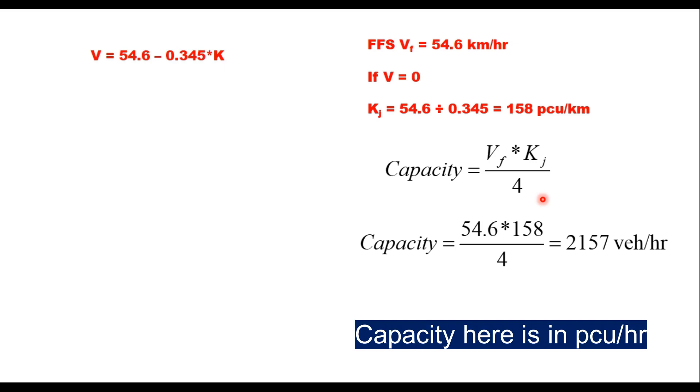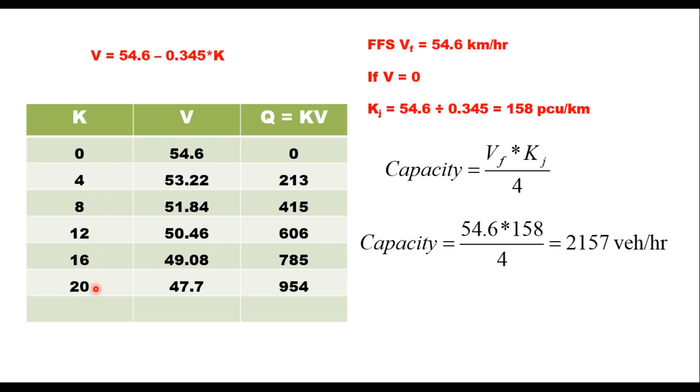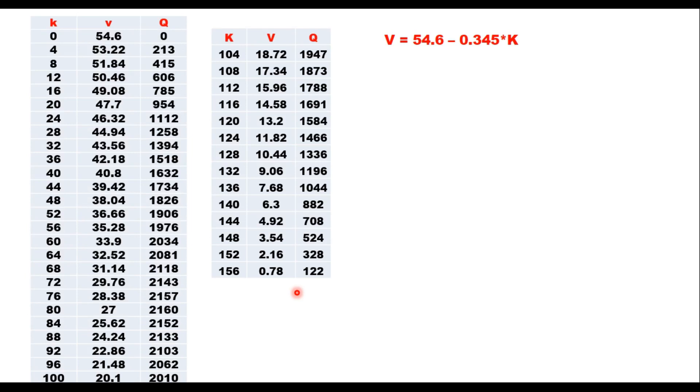Now if you want to see how this capacity is achieved, you can prepare a table. You can generate the data. K you can take from 0 to 158, the jam density. Beyond that speed will become negative. You can have 0 density, then 4, it can be 6 also, it can be 5 also, but in step of 4 or 5 or 6 you generate the table. Using this equation you calculate speed, and using Q equals K into V you find out the flow. This kind of table is generated for this equation where K value varies from 0 to 156 in step of 4, V is calculated using this equation, and Q is product of these two, K into V.